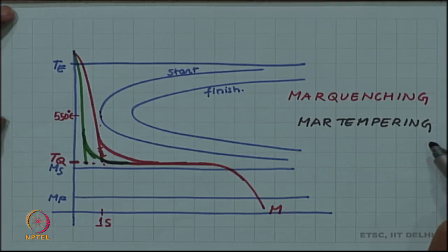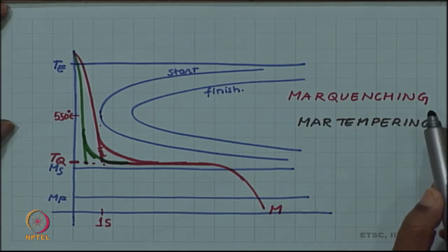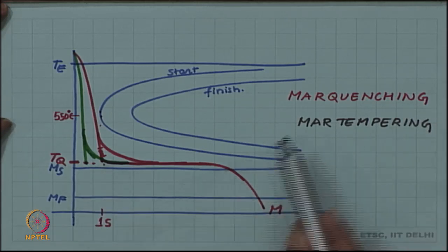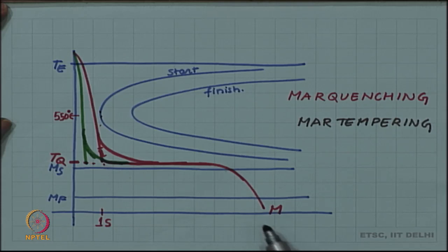Mar quenching is also called mar tempering—the two terms are synonymous. But mar quenching is a better term because like quenching produces martensite, mar quenching also produces martensite.